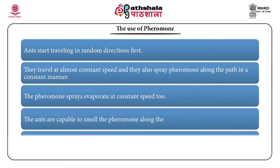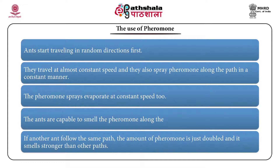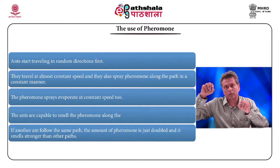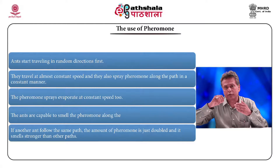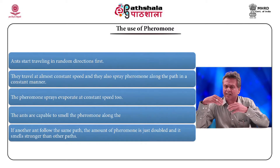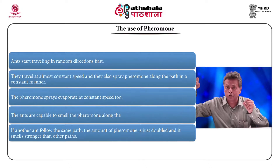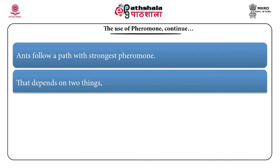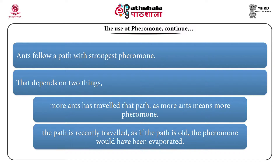How do ants find the food source and then retain that path? When an ant starts searching for a food source, it sprays pheromone along the path. Pheromone has a tendency to evaporate. Suppose it finds the food source — it follows the same path to come back, reiterating and strengthening the pheromone volume. Whenever other ants start moving, there is a high probability they choose the path with the higher pheromone value.